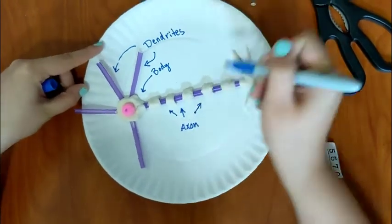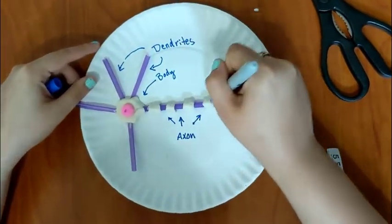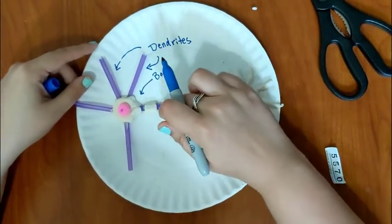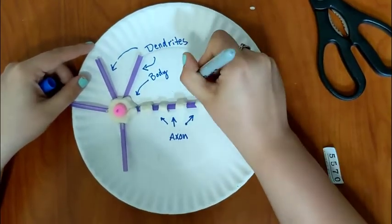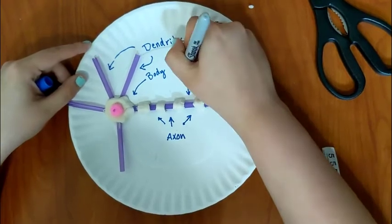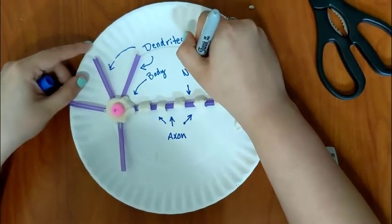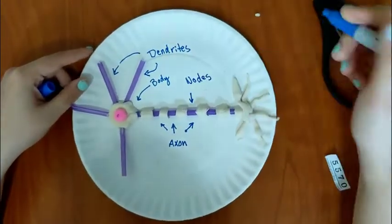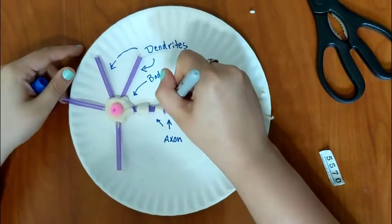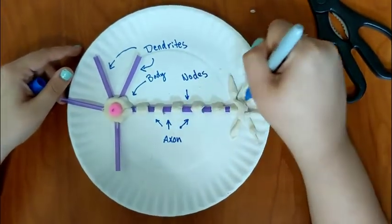And these spaces in between are myelin that we made with clay. The spaces are called the nodes of Ranvier. So I'm just going to put nodes here.